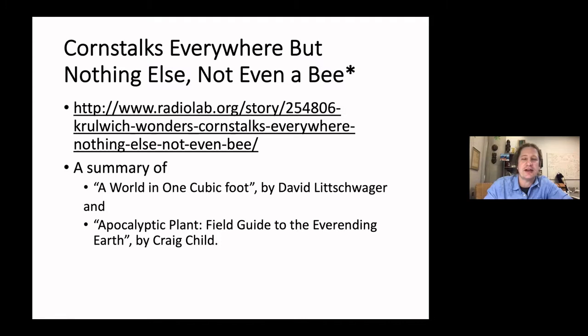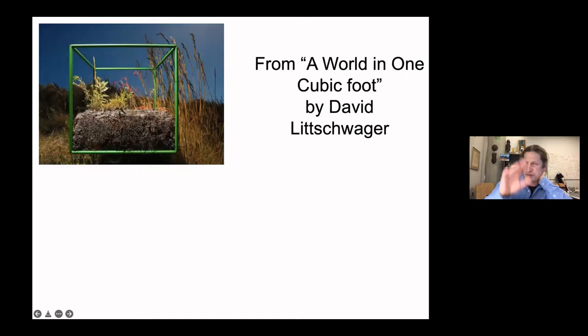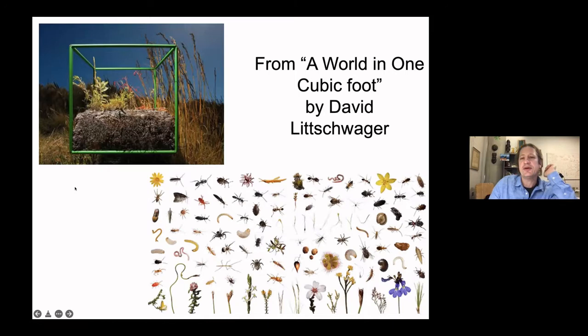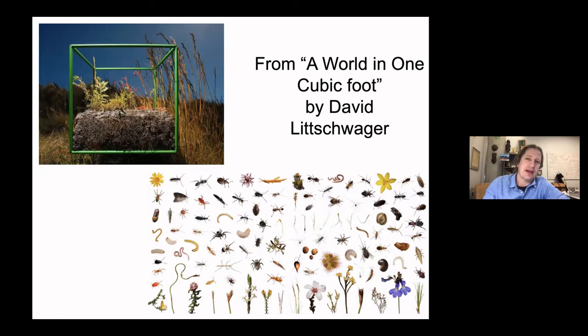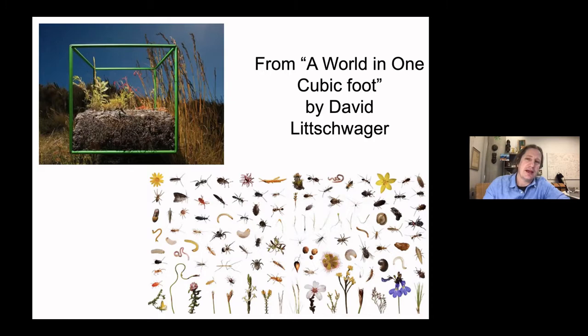Liittschwager is a photographer who goes around the world for publications like National Geographic. He takes a green box with him wherever he goes, plops it down in the soil — half full of soil, half full of above-ground biomass — and photographs everything he finds inside. It's a scientific approach to accounting for biodiversity. It's a sample size of one, but it's a pretty extensive way of accounting for all species from plants to animals. His photographs were published in this book, including scenes from the fynbos — the South African version of what we'd call prairie in Iowa.